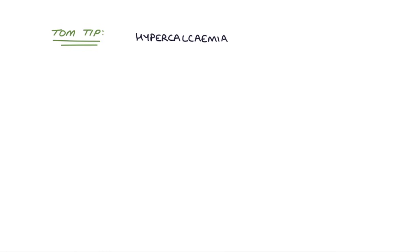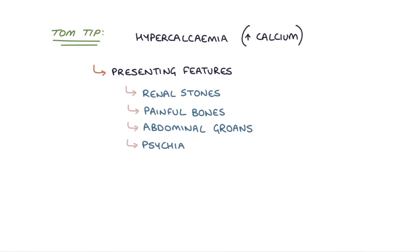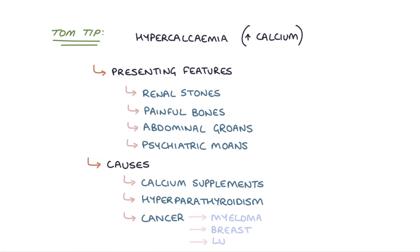A tip: remember hypercalcemia as a cause of kidney stones. You can remember the presenting features of hypercalcemia with the mnemonic: renal stones, painful bones, abdominal groans, and psychiatric moans. The three causes of hypercalcemia to remember are calcium supplements, hyperparathyroidism, and cancer — for example myeloma, breast cancer, or lung cancer.